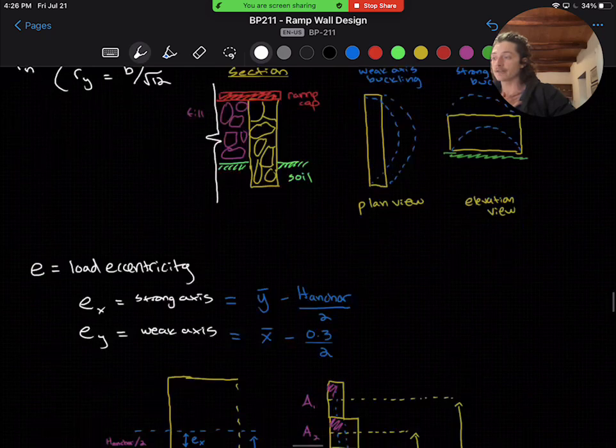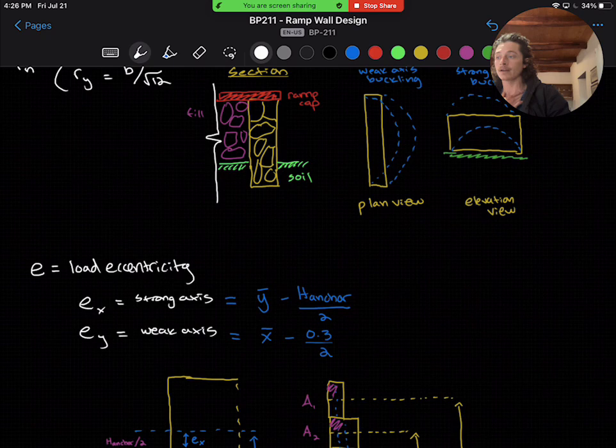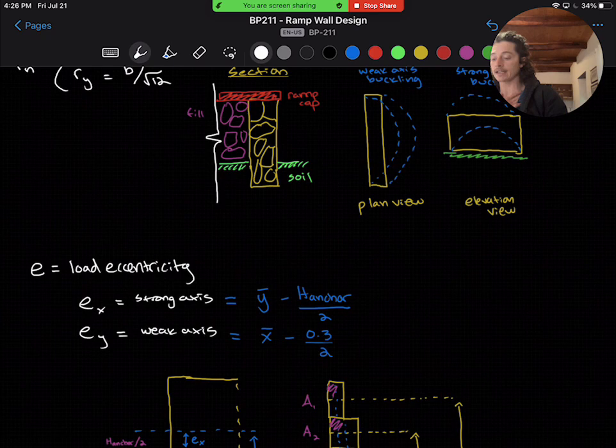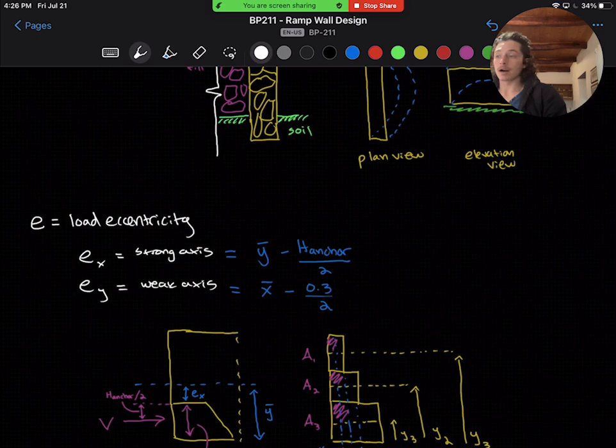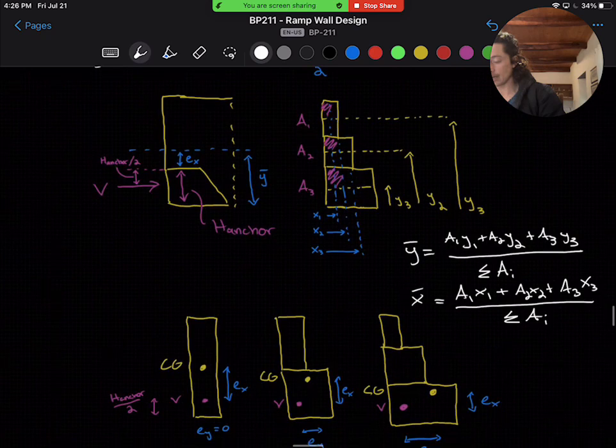And finally, E is the eccentricity of the load. This is the distance from the centroid of the load to the centroid of the section. There will always be an EX and EY value for the strong and weak axis. In order to find eccentricity, we first need to find the center of gravity of the wall section.